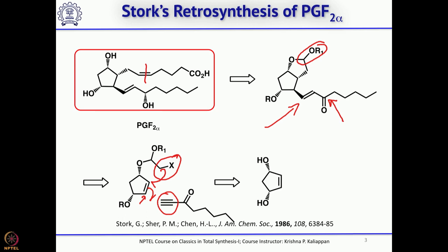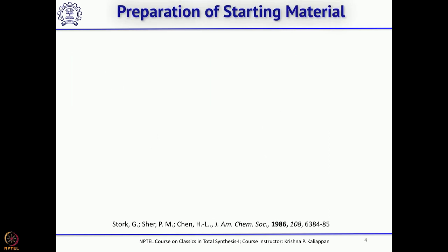This five-membered ring can be obtained from a diol, and that diol can be obtained from cyclopentadiene. If you look at the earlier synthesis of PGF2 alpha by E.J. Corey, there also the starting material was cyclopentadiene. Now let us see how he got this diol from cyclopentadiene.